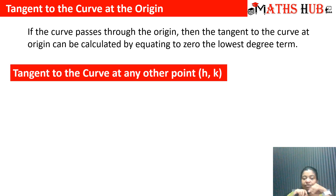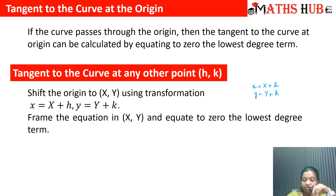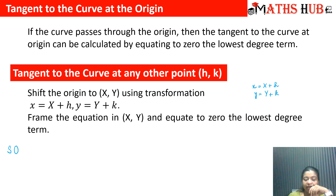Apart from calculating the tangent at the origin, we can also calculate the tangent at any other point (h, k) by shifting the origin — simply replace x with x + h and y with y + k. This shifts the origin to the new coordinate system (X, Y), and then equating the lowest degree term to zero gives the tangent at the point (h, k). So we have covered two important points: symmetry and whether a curve passes through the origin.